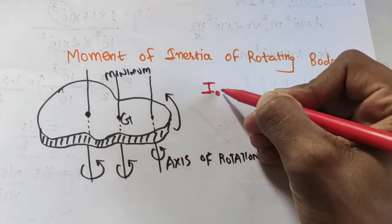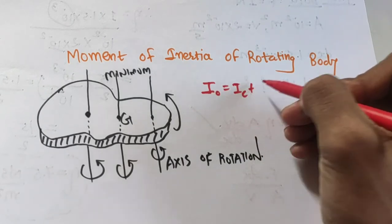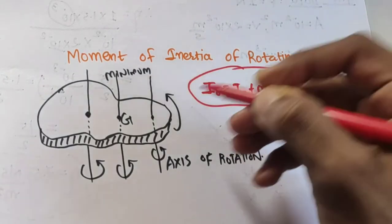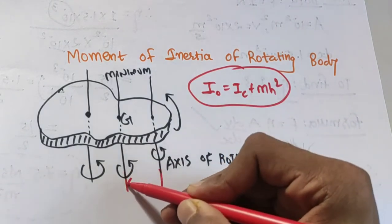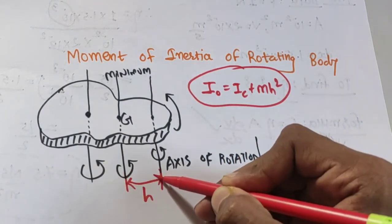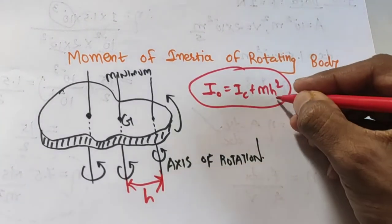Parallel axis theorem: I_o is equal to I_c plus m h squared, where h is the parallel distance or the perpendicular distance between two parallel axes.